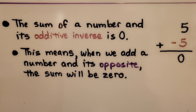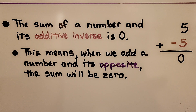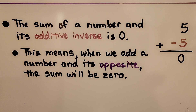The sum of a number and its additive inverse is zero. This means when we add a number and its opposite, the sum will be zero. Positive five plus negative five is equal to zero.